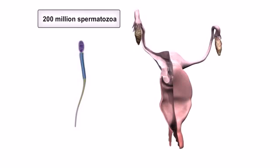When ejaculation occurs during intercourse, approximately 200 million sperm, or spermatozoa, are deposited into the vagina.